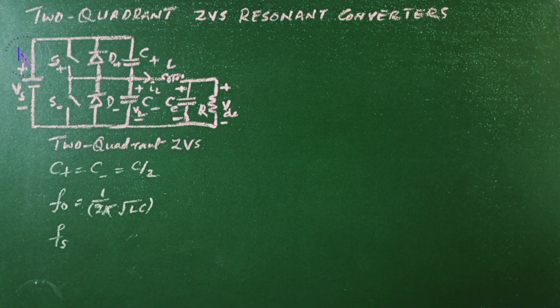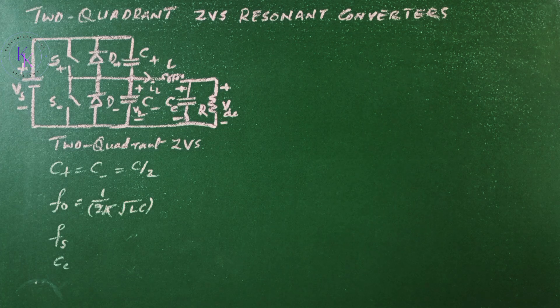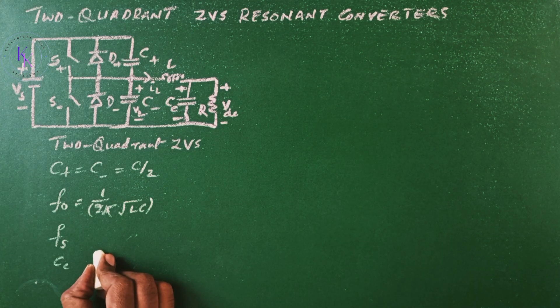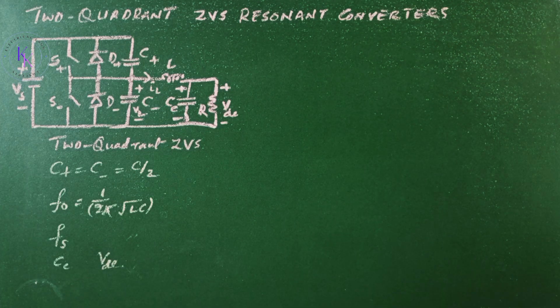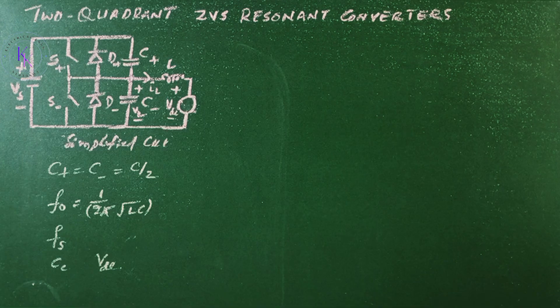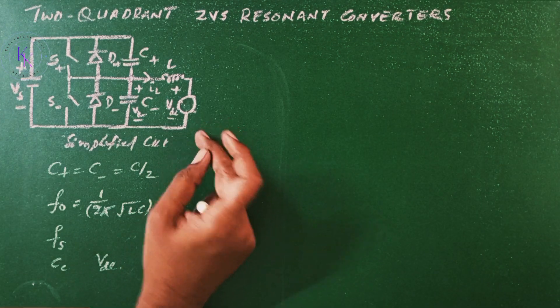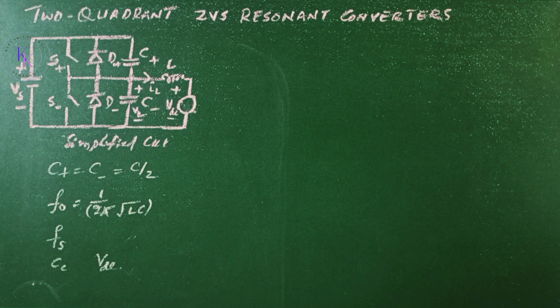Assuming the filter capacitance CE to be large, the load is replaced by a DC voltage VDC to make the circuit simple. Now here the load is replaced with VDC to make it a simplified circuit.